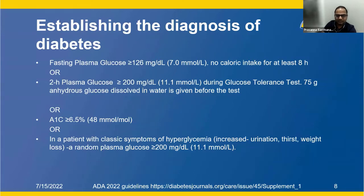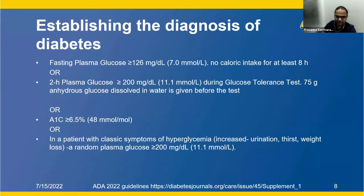Establishing the diagnosis of diabetes: a fasting plasma glucose greater than 126 mg/dL with no calorie intake for at least eight hours; a two-hour plasma glucose greater than 200 after a 75-gram oral glucose tolerance test; an A1C greater than 6.5%; and in a patient with classic symptoms of hyperglycemia — increased urination, increased thirst, weight loss — a random plasma glucose greater than 200 is sufficient for diagnosis.